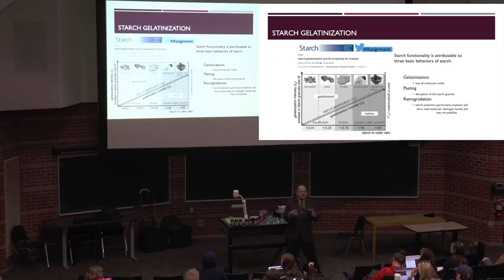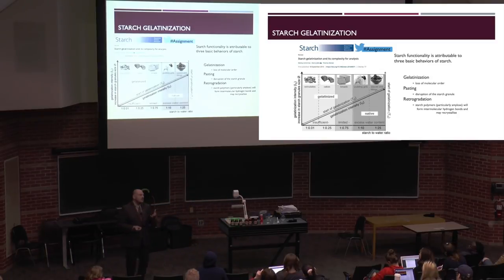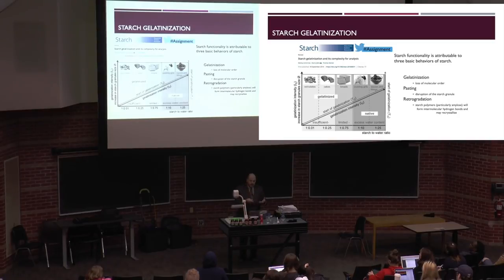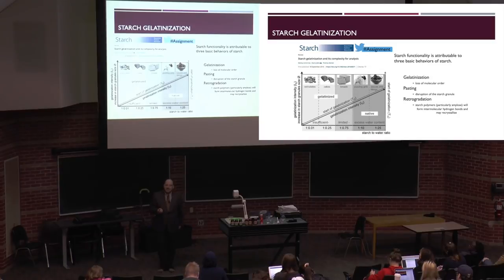We can prevent cold staling by functionalizing the starch, but there isn't a lot of consumer acceptance for chemically modifying these ingredients. Retrogradation is highly susceptible in starches that are high in amylose. Amylopectin doesn't have as high a tendency to undergo retrogradation.